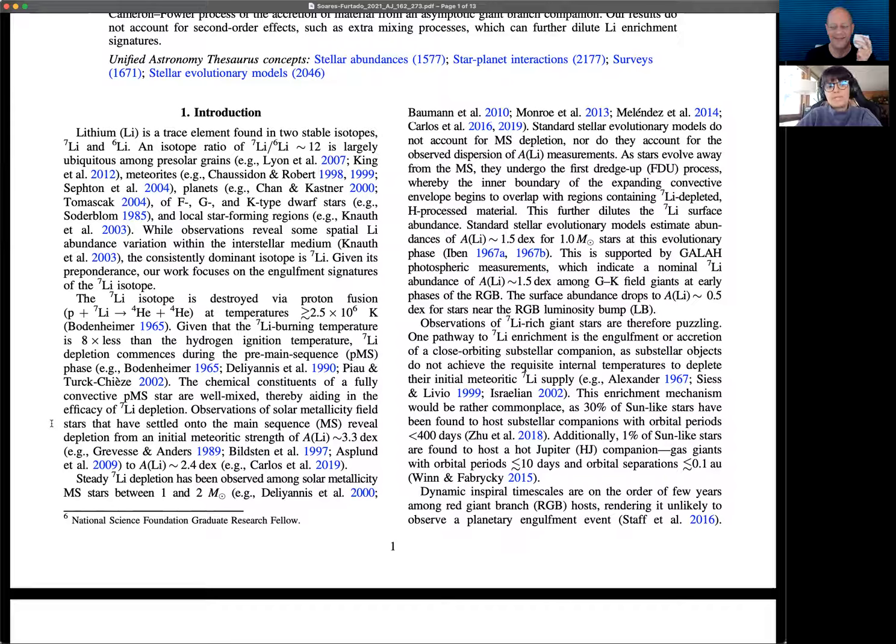For substellar companions, this is not taking place. That primordial lithium abundance, which tends to be about 3.3 dex in our solar system, is maintained. If a star is then accreting a significant amount of that material, you may be able to see some spike in that abundance signature. Generally, a star that is off of the main sequence turnoff, the lithium threshold for enrichment is generally about 1.5 dex.